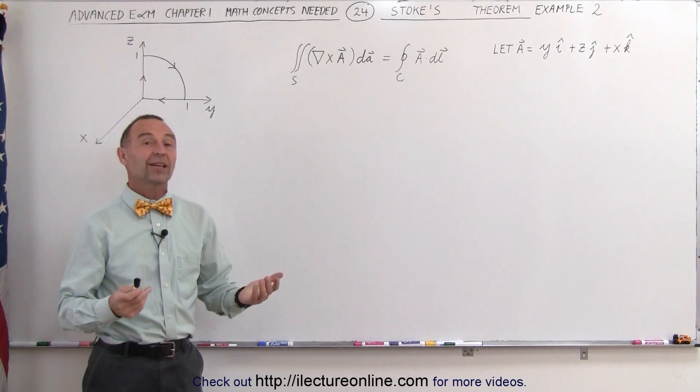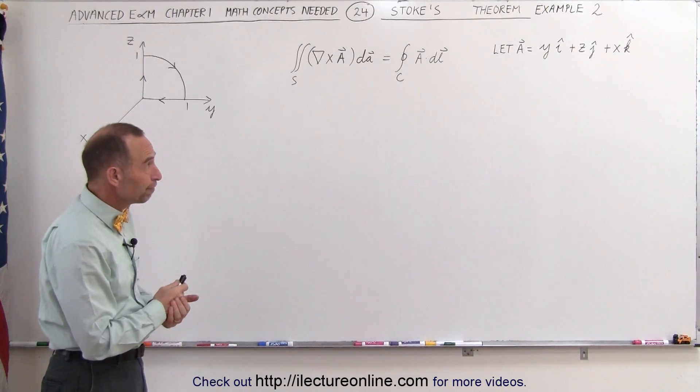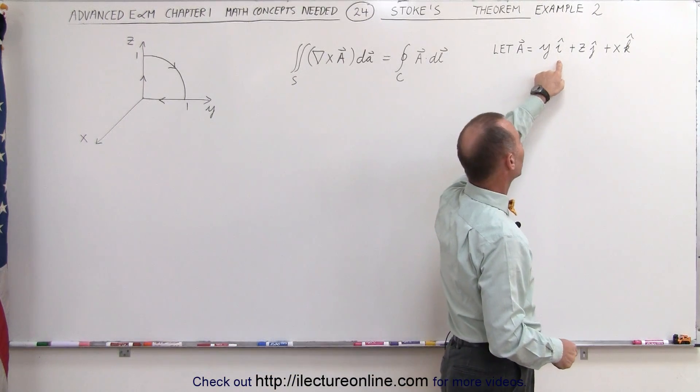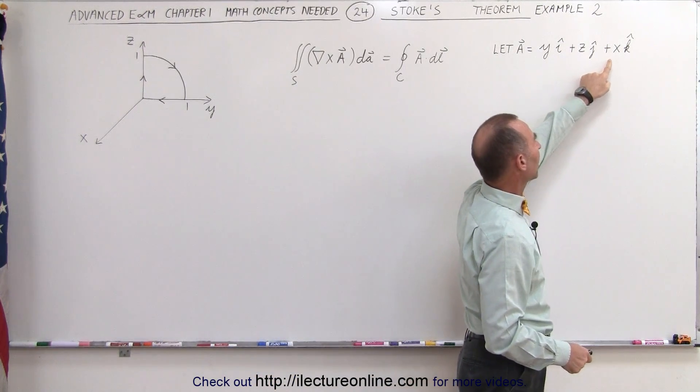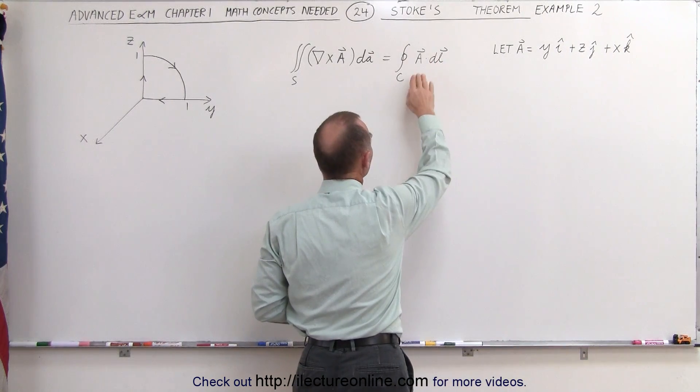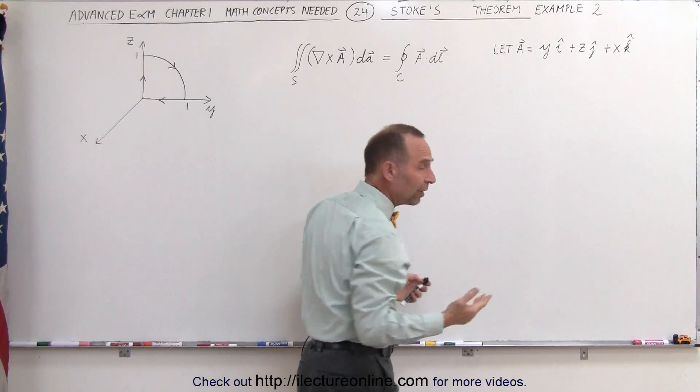Welcome to ElectronLine. Here's our second example of how to use Stokes' Theorem. Here we have the vector field, y in the i direction plus z in the j direction plus x in the k direction, and we're supposed to integrate A dot dL, and let's go ahead and try to set that up.